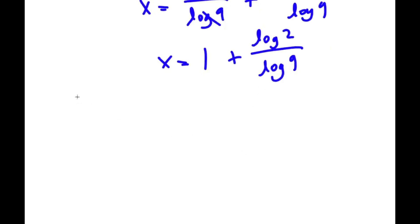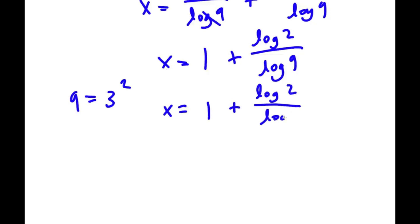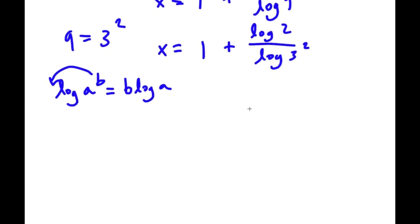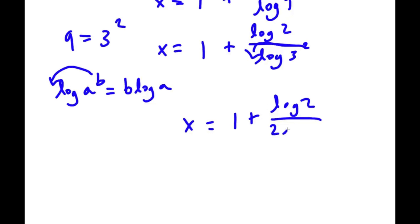Now log 9 — well, 9 is the same thing as 3 squared. So now if I replace 3 squared for 9, I get x equal to 1 plus log 2 over log 3 squared. Using the power rule of logarithms, log 3 squared is going to equal 2 times log 3. So now I have x is equal to 1 plus log 2 over 2 log 3.